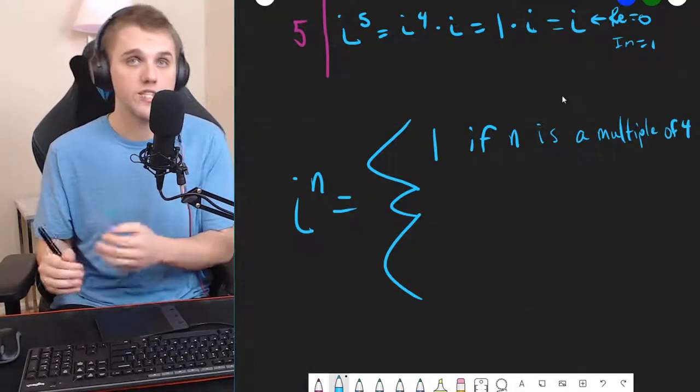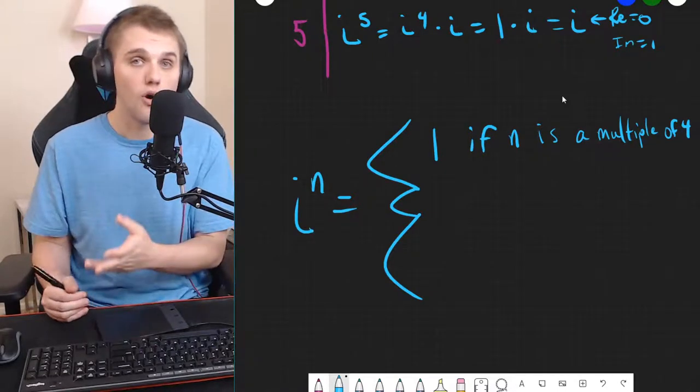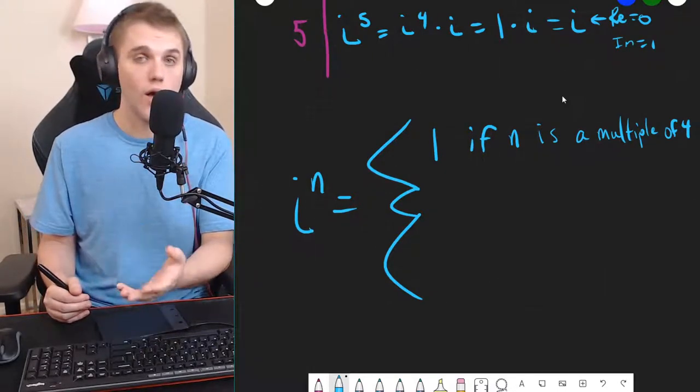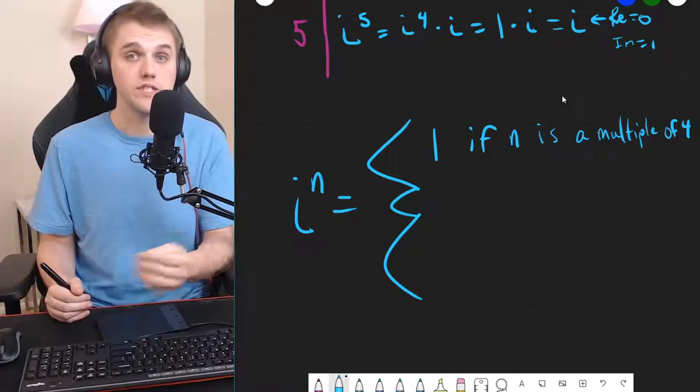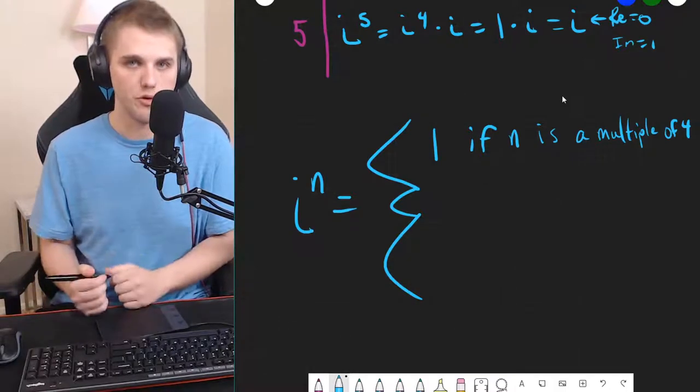i to the n is 1 if n is a multiple of 4. Now, I should clarify, when I say multiple, I mean it could be 4, or 8, or 12, or 16, or even 0, or negative 4, or negative 8, specifically all of the integer multiples of 4.